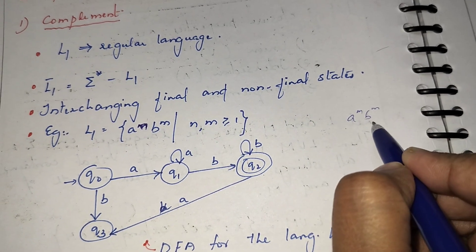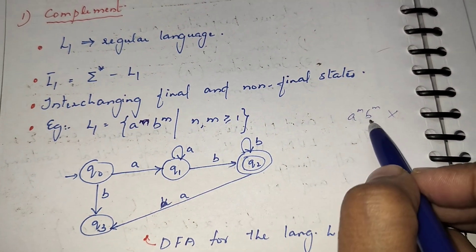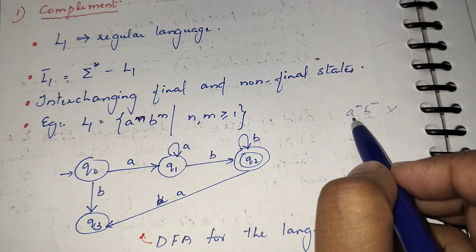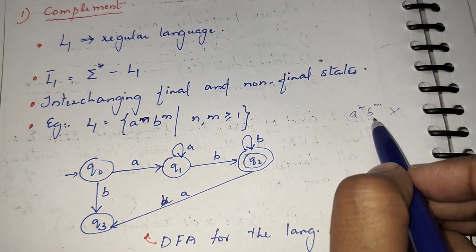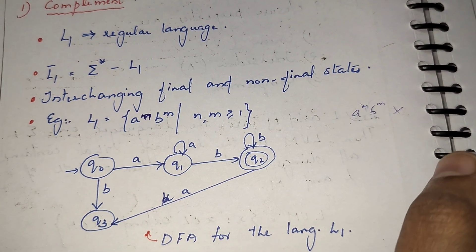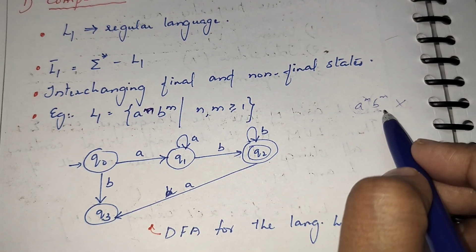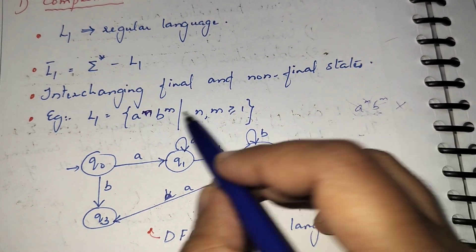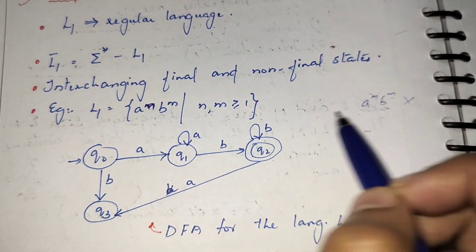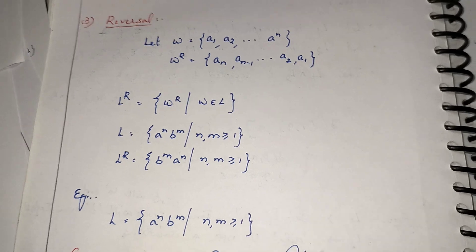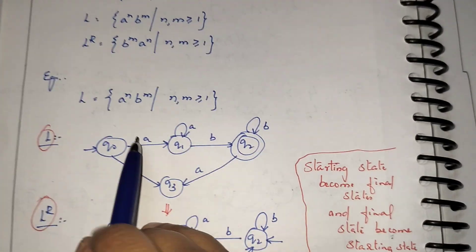If I write a raised to m b raised to m, that means equal number of A's followed by equal number of B's, which is not regular. We cannot construct a finite automaton for this because we would need to count the number of A's, count the number of B's, and compare them. Since a finite automaton has limited memory, counting, storing, and comparing is not possible. So this is not a regular language.